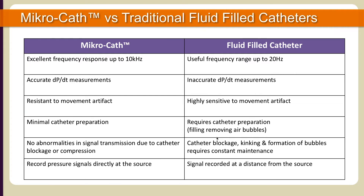There are many advantages to utilizing the Microcath for its high-fidelity pressure signal. Millar sensors are considered the gold standard for in vivo and in vitro pressure measurements. The sensor's diaphragm is extremely sensitive to small pressure changes. Compared to fluid-filled catheters, there is no motion or catheter whip artifacts. Millar sensors have an excellent frequency response and no signal attenuation. The sensor is also vented to atmosphere to minimize the effect of atmospheric pressure.